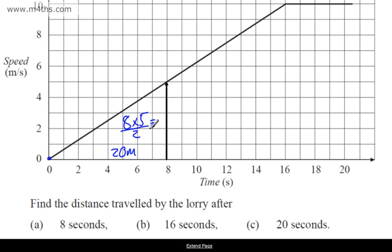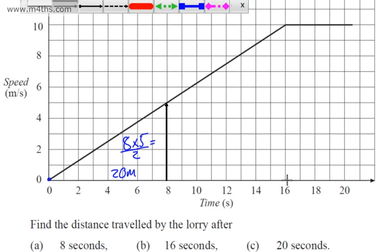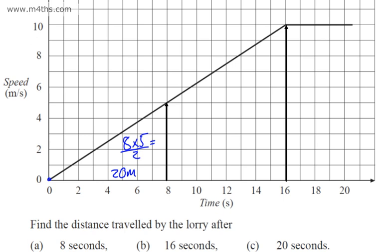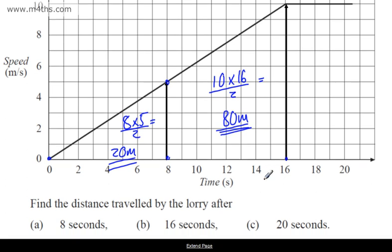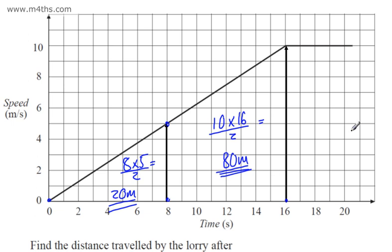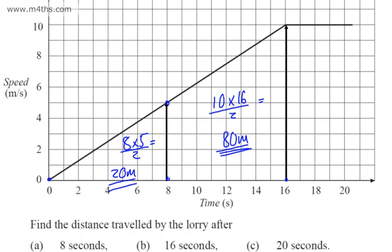For the first 16 seconds, we still have a triangle with base 16 and height 10: 10 × 16 ÷ 2 = 80 metres. So 16 metres was covered in the first 8 seconds, and since the total to 16 seconds is 80 metres, the distance from 8 to 16 seconds must be 60 metres. We could also verify this using the trapezium formula.